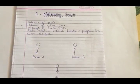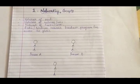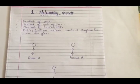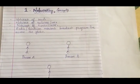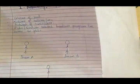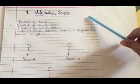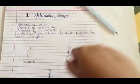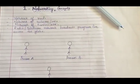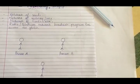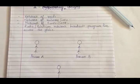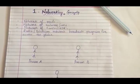In our day-to-day life we hear some general terms like network of roads, network of railway lines, network of banks and ATMs, radio or television network, broadcast programs live across the globe. Now what are all these terms? A network of roads is when two or more roads are interconnected with each other.